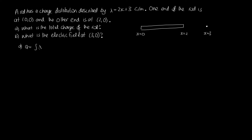For Part A, to calculate the total charge we have to integrate lambda over the length of the rod — that is, integrate lambda dx. We know lambda is given by 2x plus 3, with one end at x equals zero and the other at x equals two.